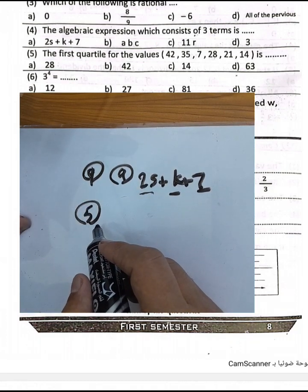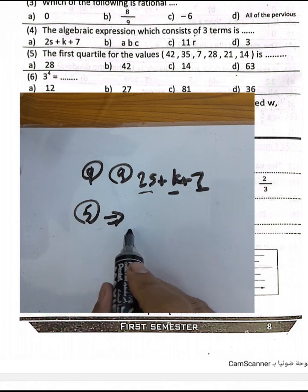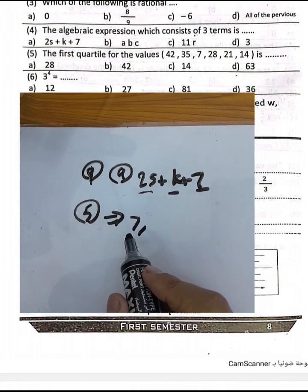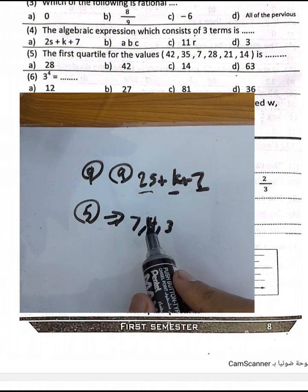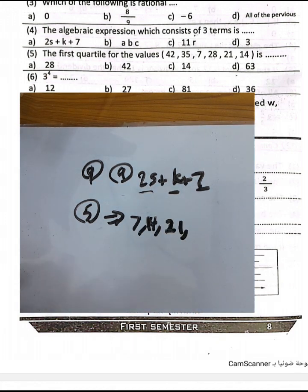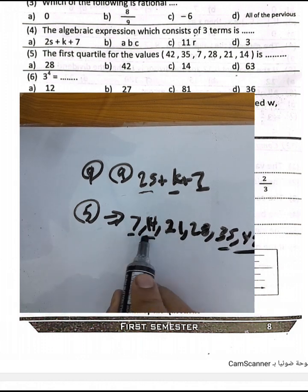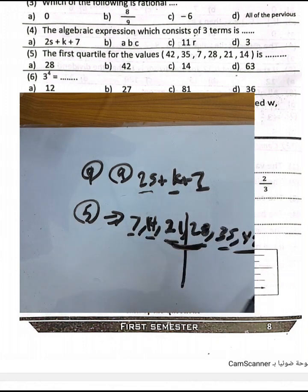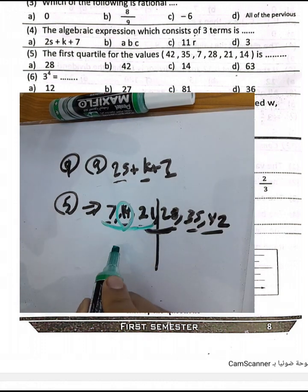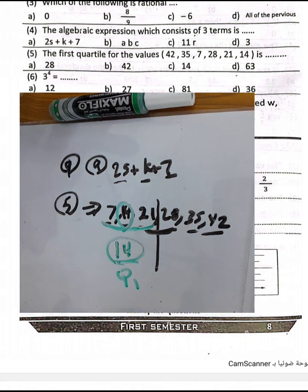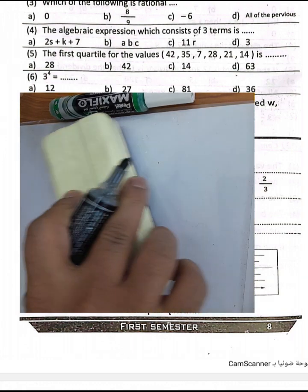MCQ question number 5: find the first quartile. First, arrange the values in order: 7, 7, 7, 14, 14, 21, 28, 35, 42. Divide to find the median, then look at the left half. The first quartile is 14. Choose letter C.